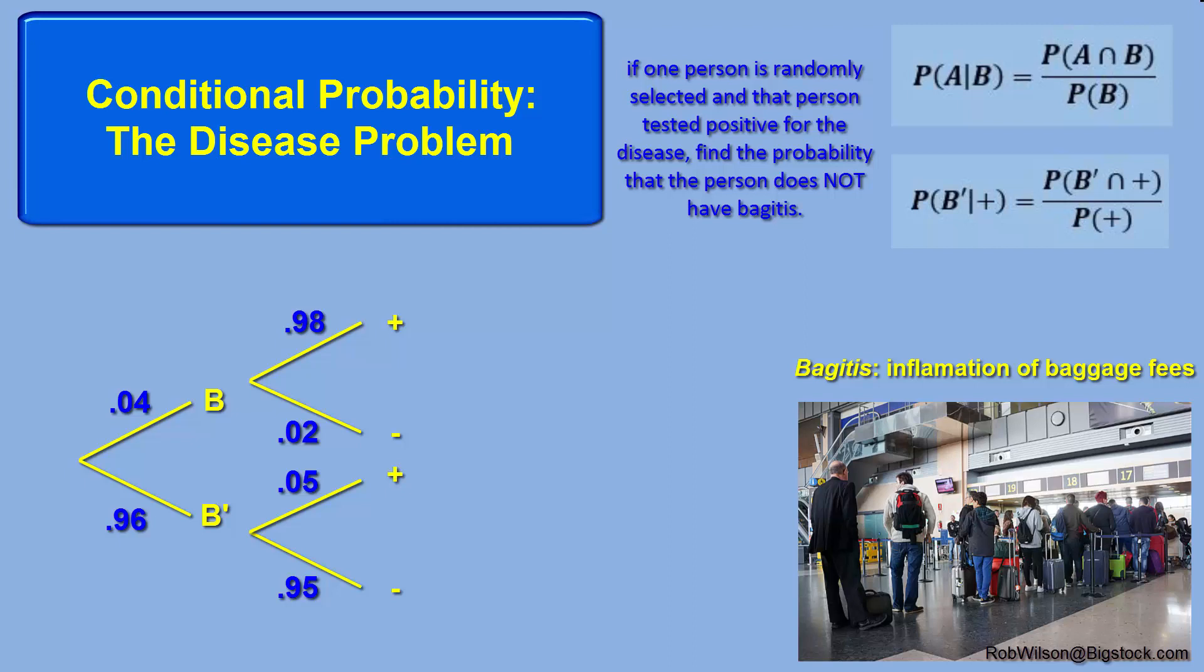Because testing positive depends upon having the disease or not, it's nice to set up a tree diagram that begins with the base rates of having or not having the disease. This allows a logical place to record each probability for testing positive. If one has the disease, there's a 98% chance of testing positive. If one doesn't have the disease, there's a 5% chance of testing positive.